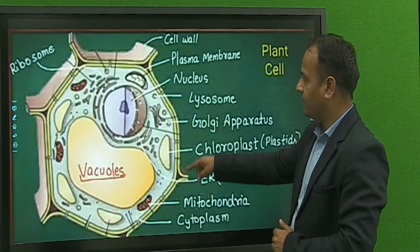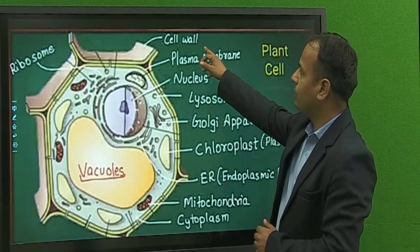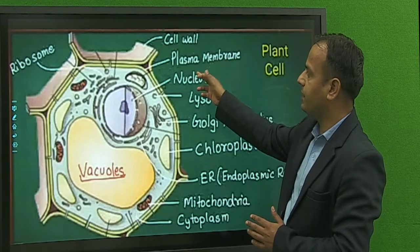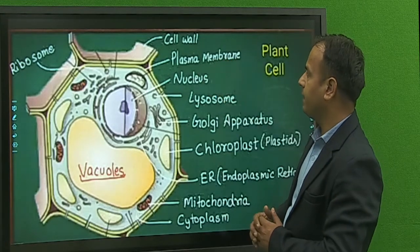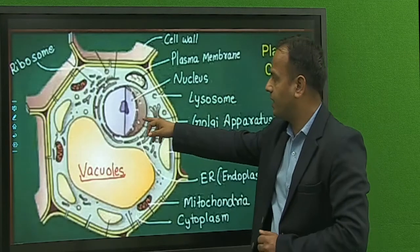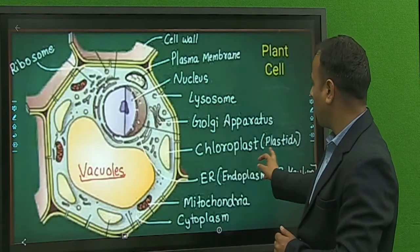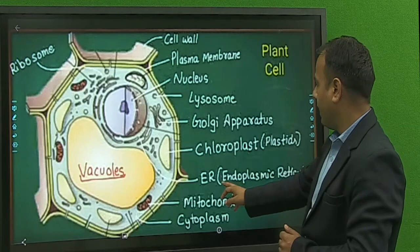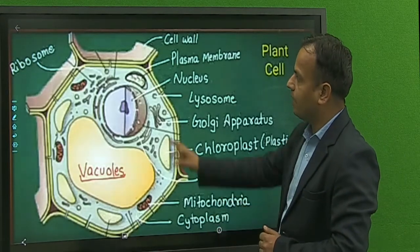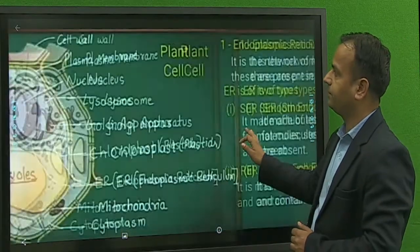The structure of the plant cell. Plant cells have some organelles: Cell wall, which is the outermost layer of the plant cell; Plasma membrane, which is a permeable membrane found in both plant and animal cells; Nucleus, present in the center of the cell; Lysosomes, Golgi apparatus, Chloroplast, Endoplasmic reticulum, Mitochondria, Cytoplasm, and Ribosomes.